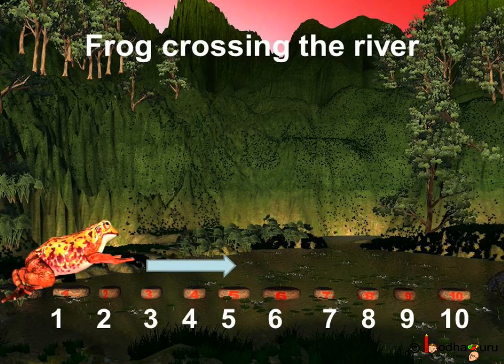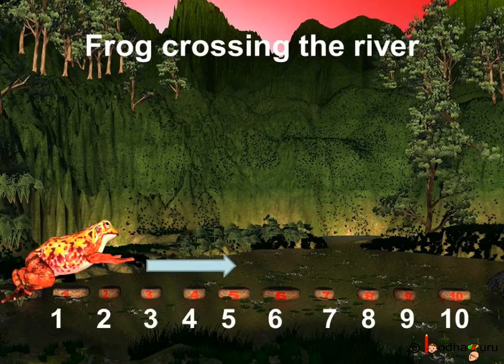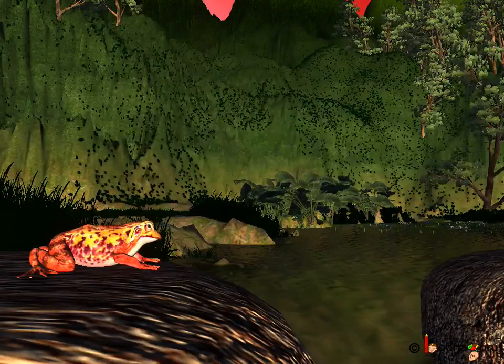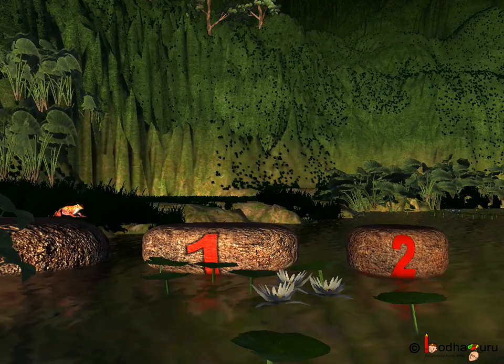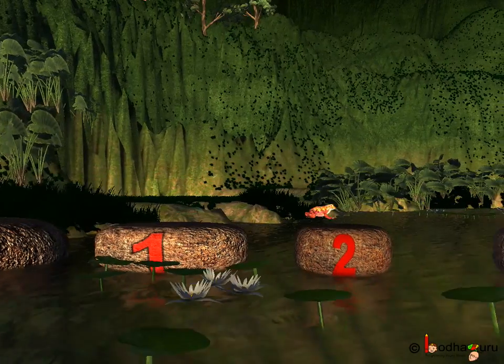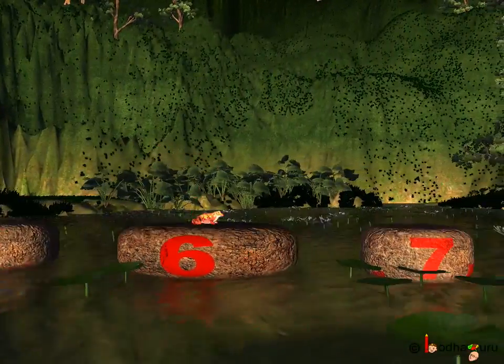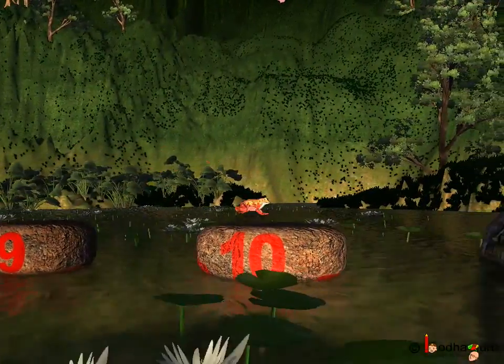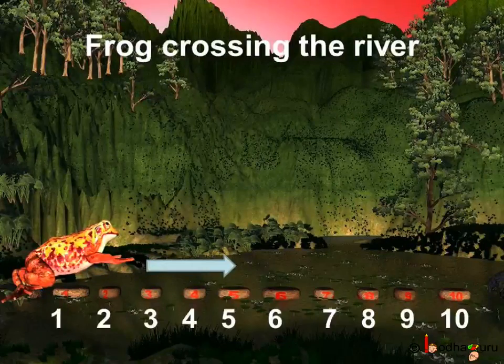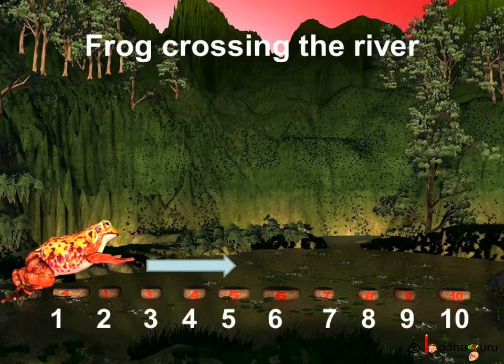As we saw, all the animals were crossing the river using all the stones. See, the frog hopped on the stones 1, 2, 3, 4, 5, 6, 7, 8, 9, and 10 to reach the other side of the river.